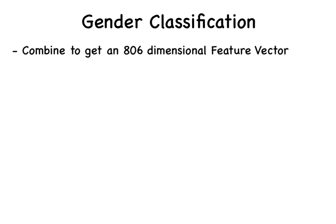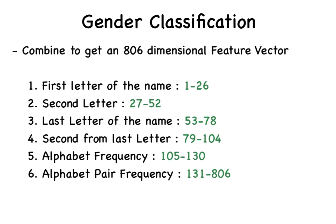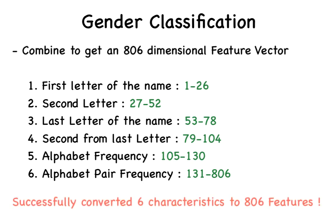So what are its constituents? The first character of the name is determined by the first 26 features. The second character of the name is determined by features 27 to 52. The last character is given by features 53 to 78. The second to last character is given by features 79 to 104. The alphabet frequency in the name is given by features 105 to 130. And finally, we have the alphabet pair frequency, which is given by the remaining features 131 to 806. And so, we have successfully converted these six non-numeric characteristics into 806 numeric features, up and ready for analysis.